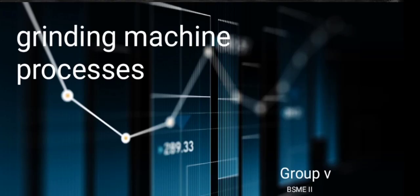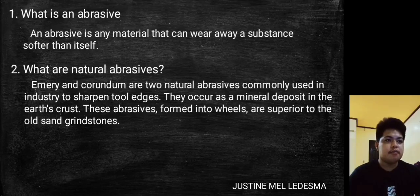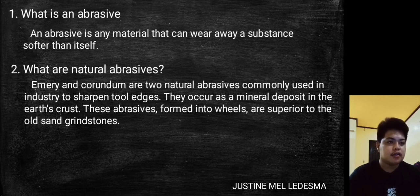To do a good job of grinding, one must not only operate the machine but also understand abrasives and grinding wheels. An abrasive is any material that can wear away substances softer than itself. Emery and corundum are the two natural abrasives commonly used in industry to sharpen tool edges — they occur in mineral deposits in the earth's crust and are superior to old grindstones.